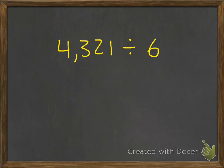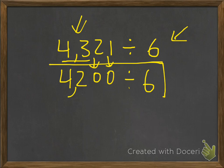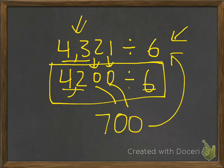Let's take a look at another one. We're going to estimate 4,321 being divided into 6 groups. We're going to think of the multiples of 6, and we're going to look at the first two numbers in the dividend, which is 43. The closest multiple of 6 to 43 is 42. So that 43 part we change into a 42, the remaining digits become 0s, and now we have 4,200 divided by 6. We ignore those zeros and think of 42 divided by 6, which is 7. The two zeros get added to our answer, so the estimated answer is 700.